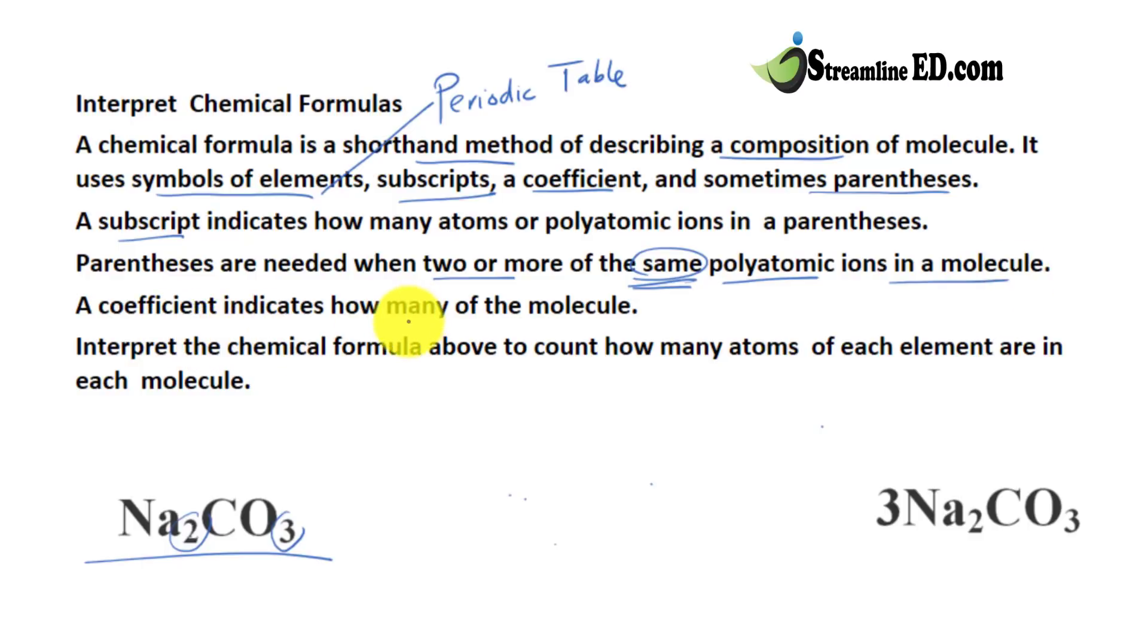The coefficient indicates how many of the whole entire molecule. Here, we don't have a coefficient, right? But we know it must be a number 1. Over here, we have a coefficient of 3. So, that tells you there are 3 of Na2CO3, the whole entire thing. 3 of. So, it's 3 times.